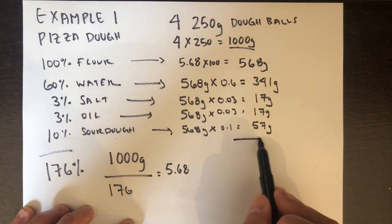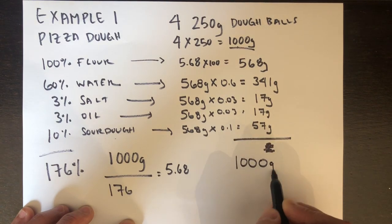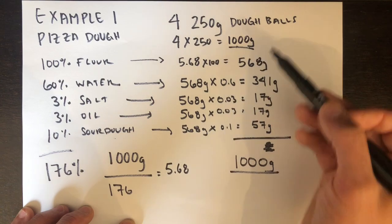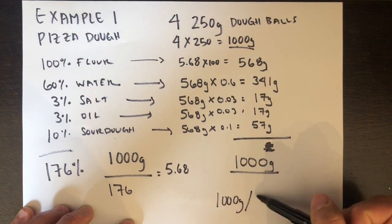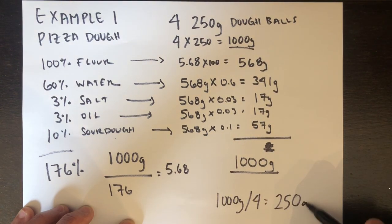I'm rounding here a little bit, no big deal. I'm going to add all that up and guess what I get? 1000 grams. That's exactly what I was looking for. And that's four dough balls, going to give me 250 gram dough balls each.